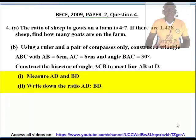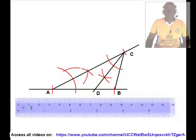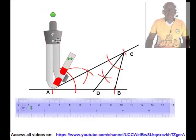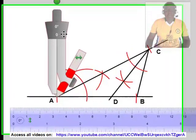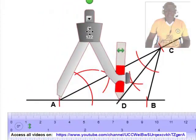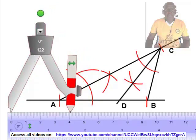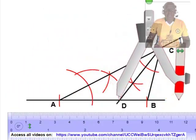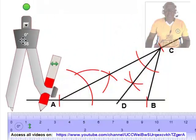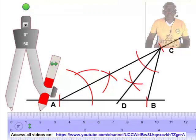Measure AD and BD, and write down the ratio AD to BD. We shall measure the lengths AD and BD using a ruler and a compass. To measure the length AD, we shall place the metallic tip of the compass at A and extend the pencil tip to D, then transfer the measurement onto a ruler. The length of BD is approximately 4 centimeters, and the length of AD is approximately 2 centimeters.